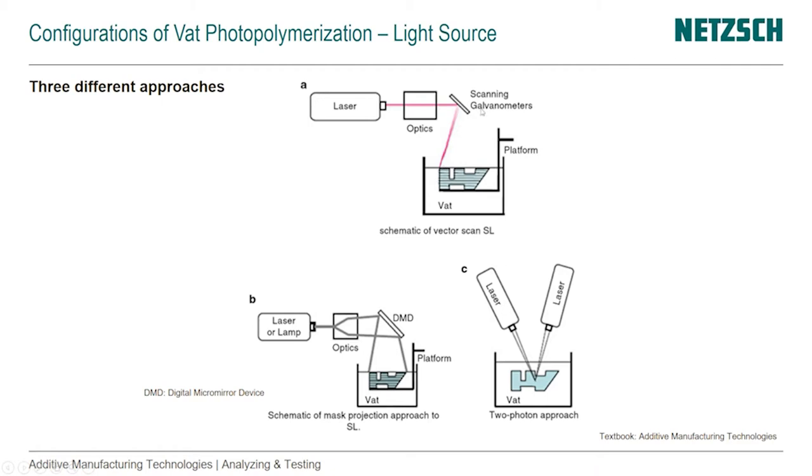So in approach A, we have the XY mirror, and it traces, selectively cures the surface of the part onto the previous layers inside of a VAT, and the platform is moving down.